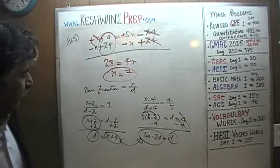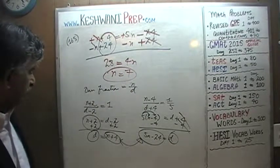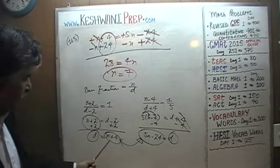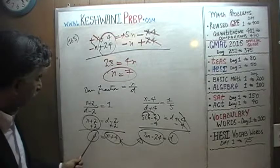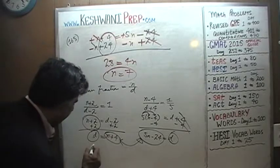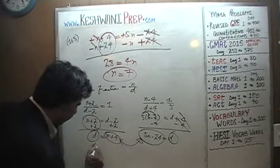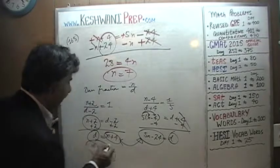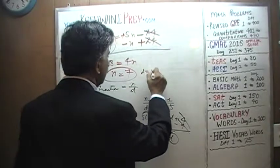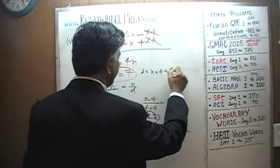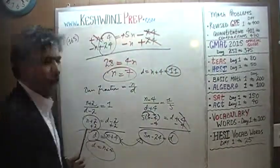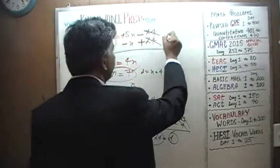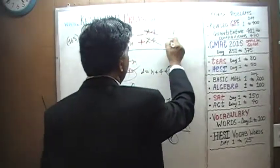Our numerator is 7, and once we have the numerator we can figure out the denominator. Using the simpler equation, d equals n plus 4, the denominator is simply n plus 4, which is 7 plus 4, equals 11. Which means our fraction that we're claiming is 7 over 11.